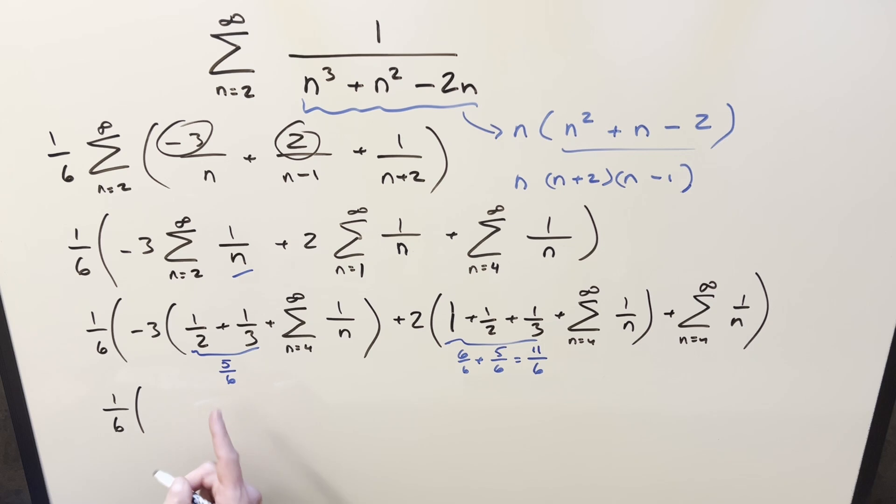So then we'll simplify. We've got 1 6th in front. Minus 3 times 5 over 6 is minus 15 over 6. Then 2 times 11 over 6 is going to be 22 over 6. And then we're going to have all of our sums. Let's call this thing S because we've got it in three places. So this is going to become minus 3 times S, plus 2 times S, and then just a plus 1 S. But then notice all this stuff here, this all goes away because this is all going to be a 0. This is kind of our telescoping effect right here.